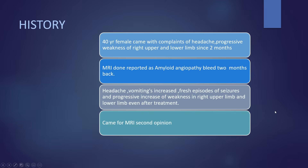Coming to the history: a 40-year-old female came with complaints of headache and progressive weakness of the right upper and lower limb since two months. Initial MRI was reported as amyloid angiopathy bleed two months back. But the headache and vomiting have increased, with fresh episodes of seizures and progressive weakness even after treatment. So they came for an MRI second opinion.